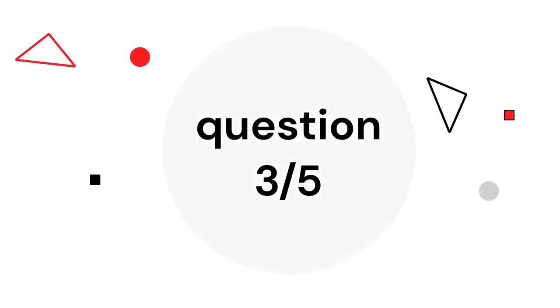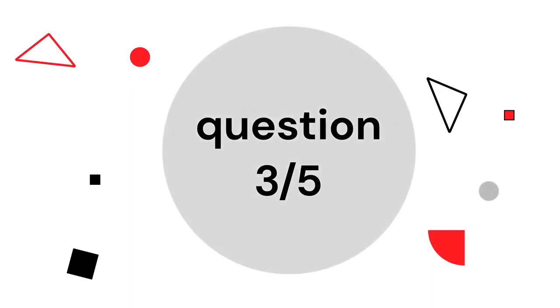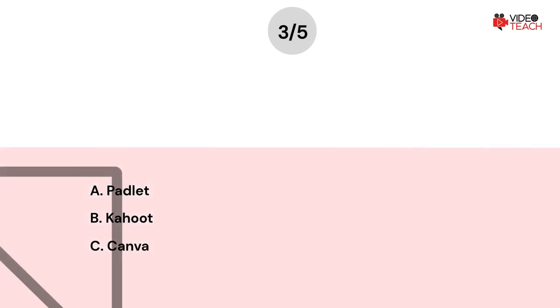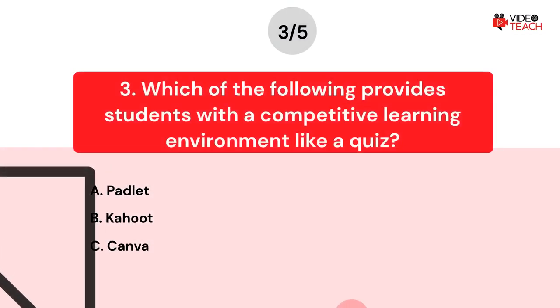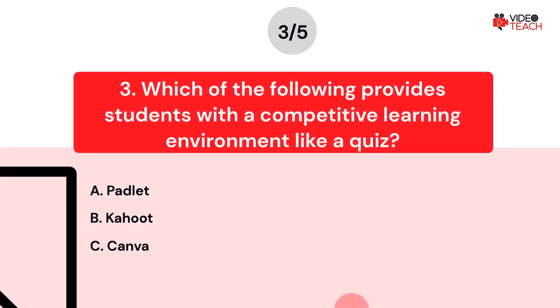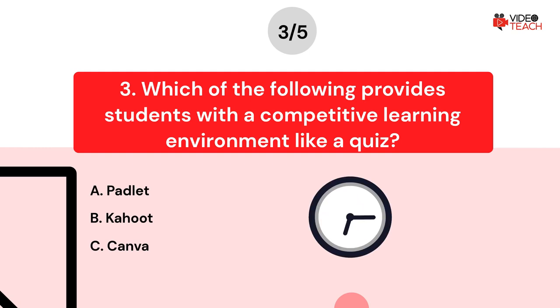Question number three. Which of the following provides students with a competitive learning environment like a quiz? Option A: Padlet. Option B: Kahoot. Option C: Canva. Now you have about 15 seconds to think about your answer.